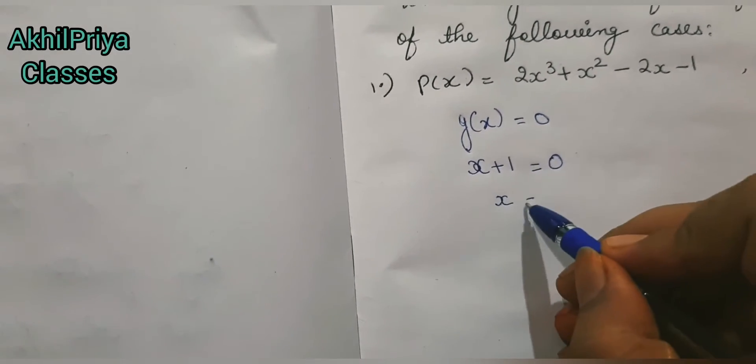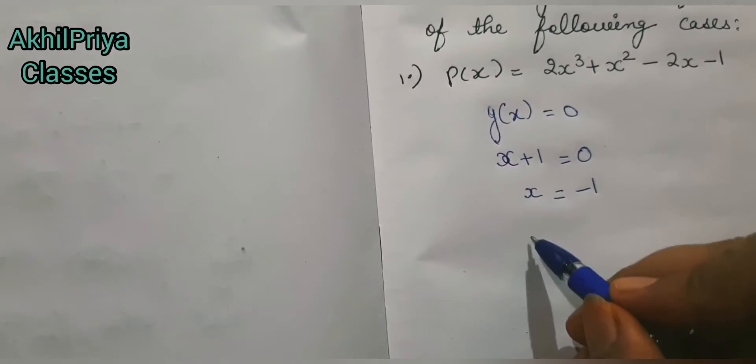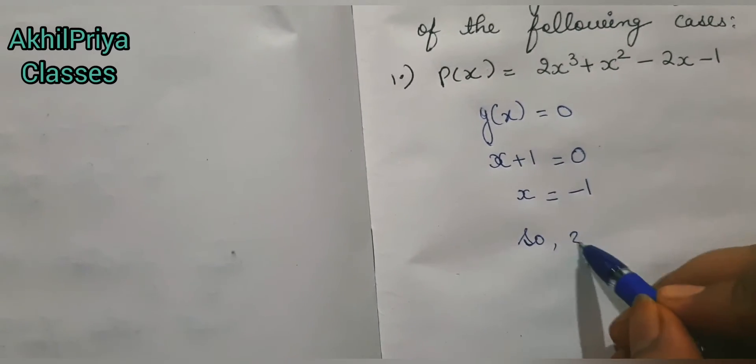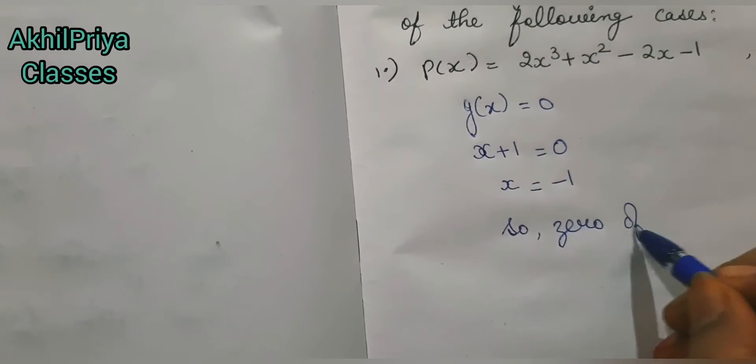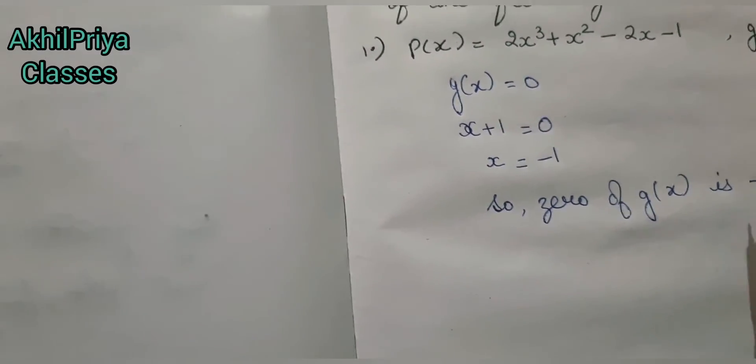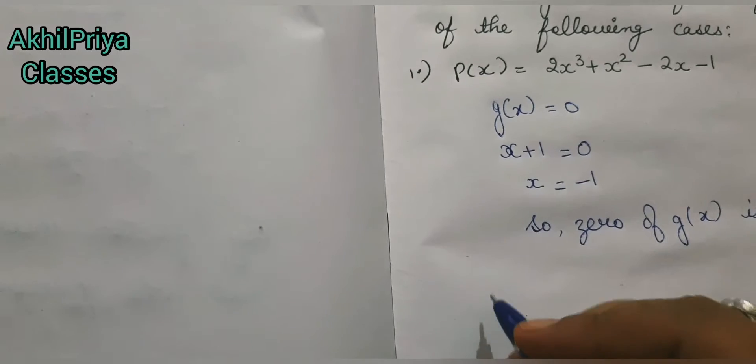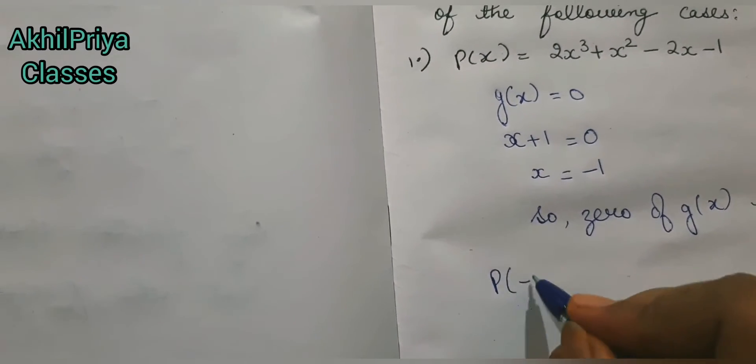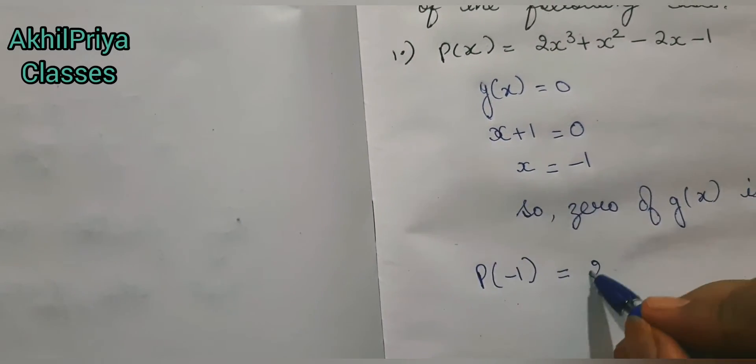So x + 1 = 0, which gives x = -1. The zero of g(x) that we have found is -1. We will put this -1 in the polynomial p(x).